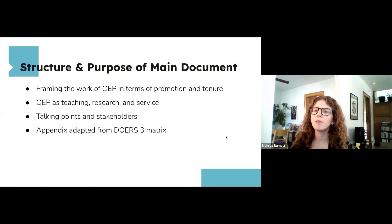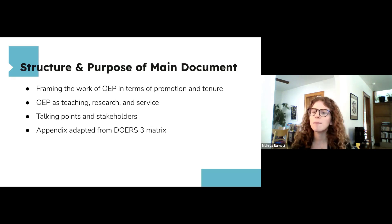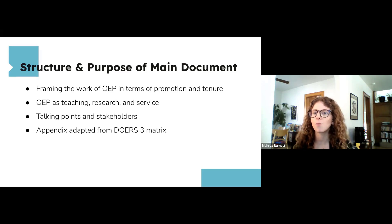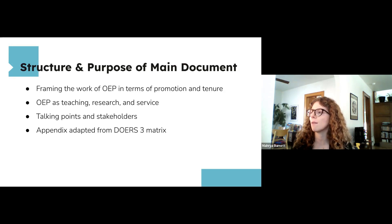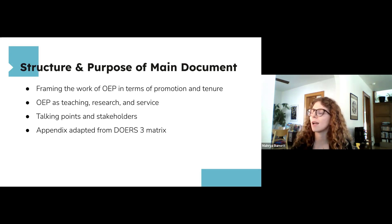The main document provides a narrative description of how OEP aligns with promotion and tenure, written accessibly with charts and bullet points, appealing to both OEP practitioners and administrators. The document covers four main areas: first, OER and OEP generally, aligned conceptually with promotion and tenure; then, advocating for inclusion of OEP in the three categories of teaching, research, and service; then specific talking points and stakeholders common across campuses; and finally an appendix mapping OEP activities to the three P&T categories.